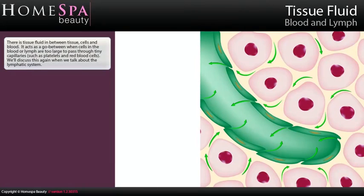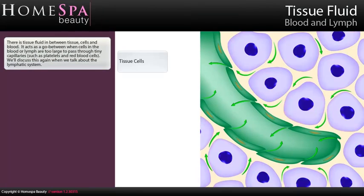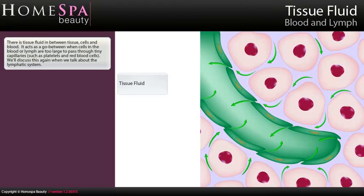Tissue fluid. There is tissue fluid in between tissue, cells and blood. It acts as a go-between when cells in the blood or lymph are too large to pass through the tiny capillaries, such as platelets and red blood cells. We'll discuss this again when we talk about the lymphatic system. These are tissue cells. This is tissue fluid.